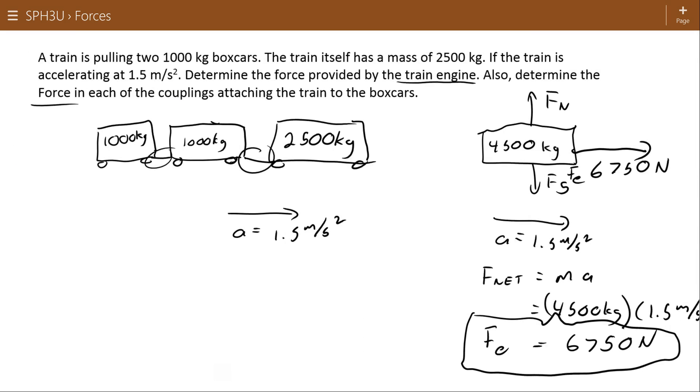We'll also determine the force in each of the couplings attaching the train and the boxcars. So I need to find force 1 and force 2. Let's do force 1 first. What I want to do is divide up this object now so that force 1 is no longer part of the internal stuff, but is instead external to the system or pulling on the system. So I'm going to make a little cleavage right here.